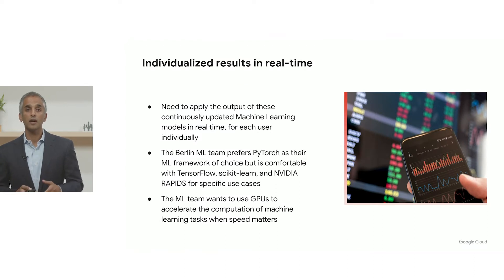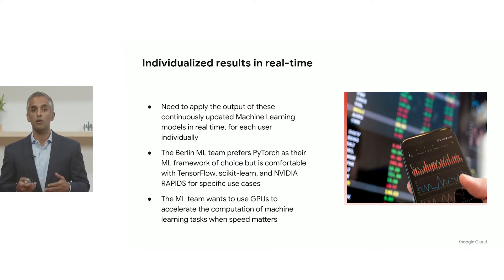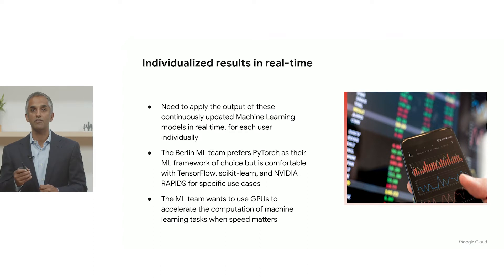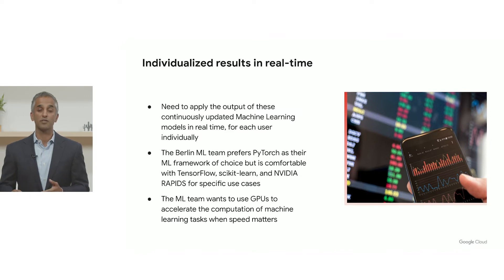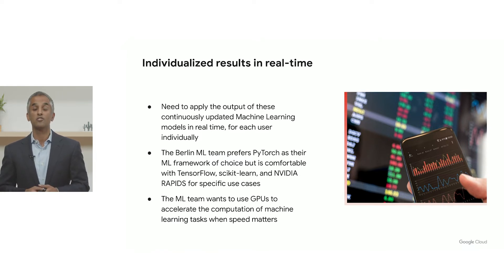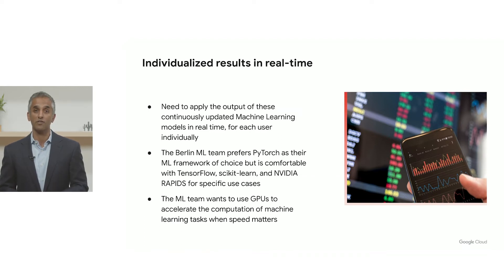The second problem is that we need to have individualized results in real time. That means the team needs to apply the output of the machine learning models, which are constantly updated, in real time, for every single user and customer individually. The Berlin ML team prefers Python, and in particular PyTorch is their ML framework of choice. They have expertise in Scikit-Learn, TensorFlow, and NVIDIA Rapids for specific use cases, but PyTorch is the one they defer to most of the time. This machine learning team also wants to use GPUs to turbocharge the computation to power machine learning tasks when speed matters — as in this case, for individualized offers in real time.